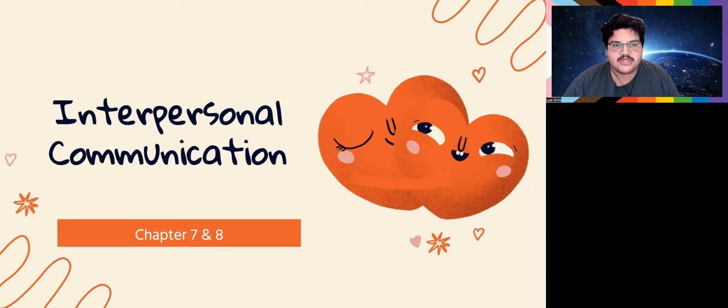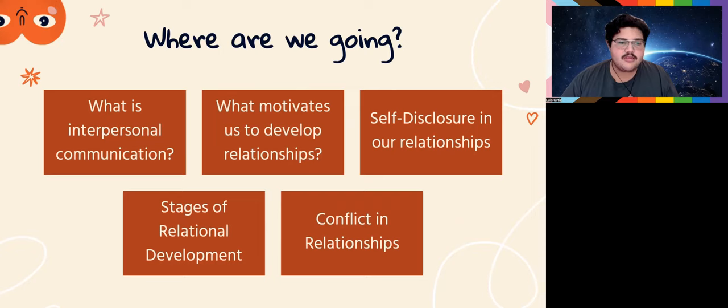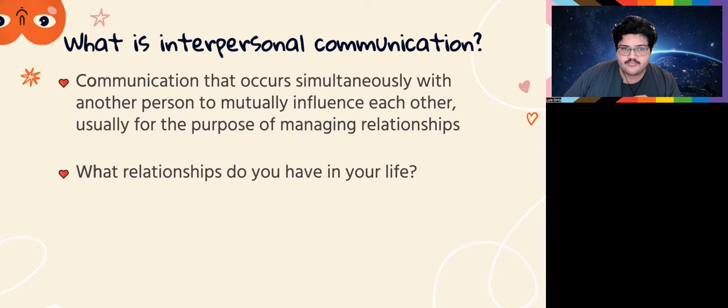We're going to talk about interpersonal communication and some theories on what this type of communication insinuates. Then we're going to talk about conflict management. Today we're covering five things: what is interpersonal communication, what motivates us to develop these relationships, what it means to have self-disclosure, the stages of relational development, and conflict in relationships.